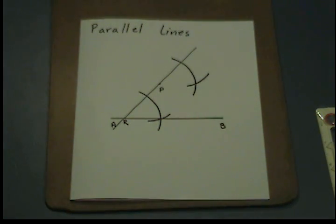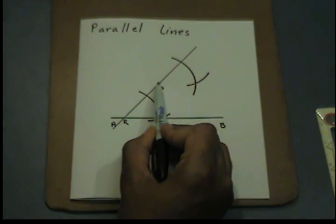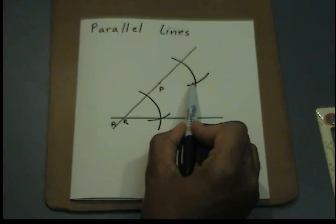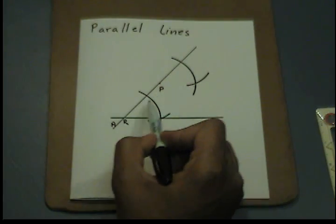Lastly, to end the process, I am going to draw a line going from P through where both arcs intersect. And that is my copied angle.